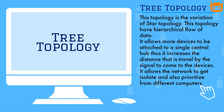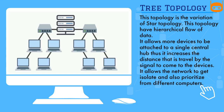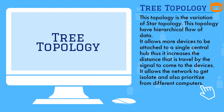Tree topology is a variation of star topology and has a hierarchical flow of data. It allows more devices to be attached to a single central hub, increasing the distance the signal travels to reach devices. It also allows the network to isolate and prioritize different computers.